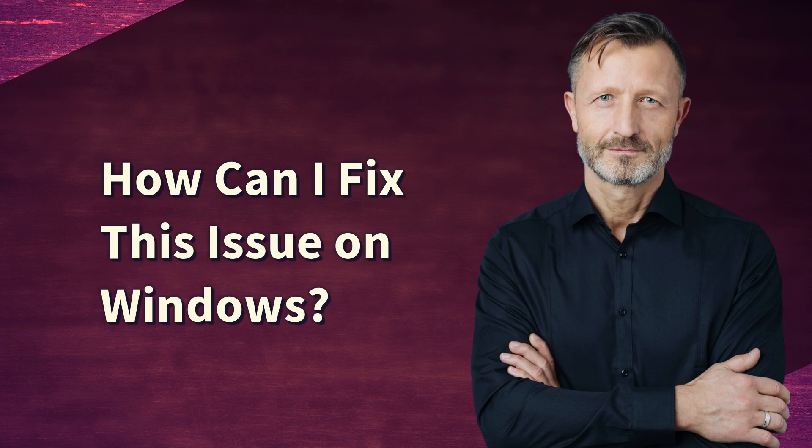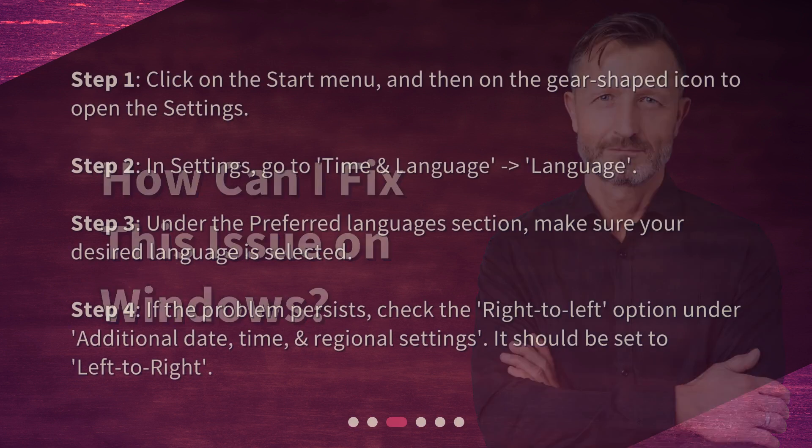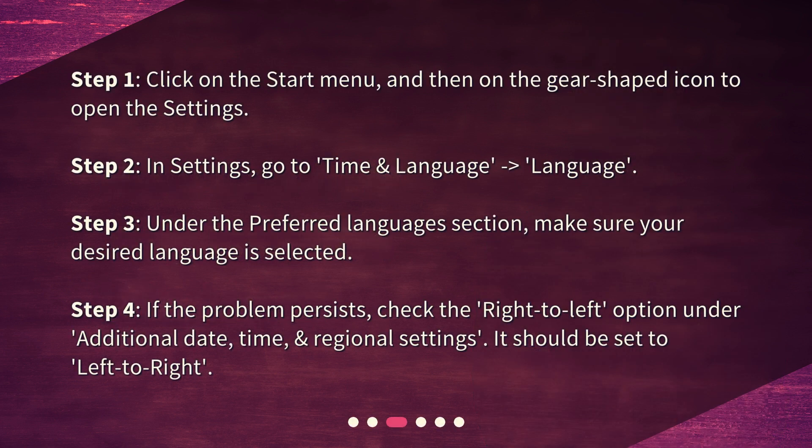How can I fix this issue on Windows? Step 1: Click on the Start menu, and then on the gear-shaped icon to open Settings. Step 2: In Settings, go to Time and Language, then Language. Step 3: Under the Preferred Languages section, make sure your desired language is selected. Step 4: If the problem persists, check the Right-to-Left option under Additional Date, Time, and Regional Settings — it should be set to Left-to-Right.